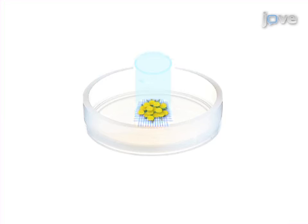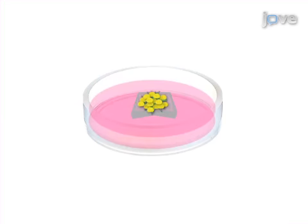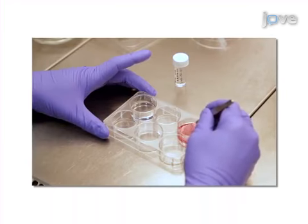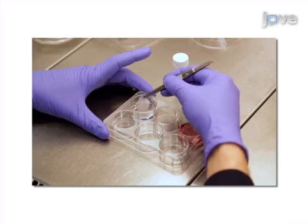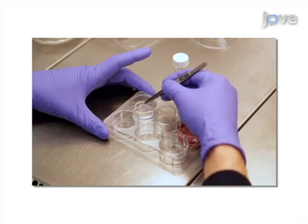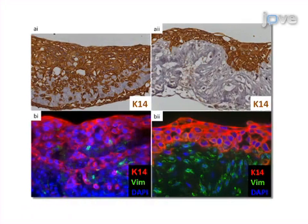This matrix is seeded with tumor cells and lifted to the air-liquid interface. After a fixed period, these 3D cultures are harvested for histological analysis of the tumor cell invasion. Ultimately, the effects of the native fibroblast matrix on tumor cell invasion can be evaluated by immunohistological analysis.